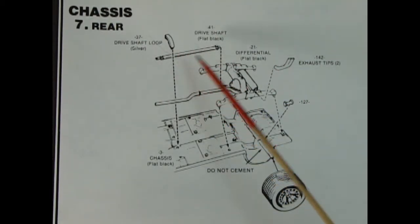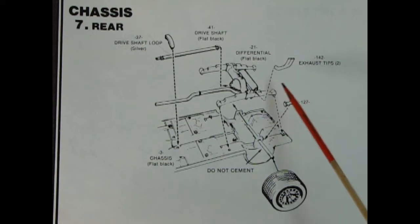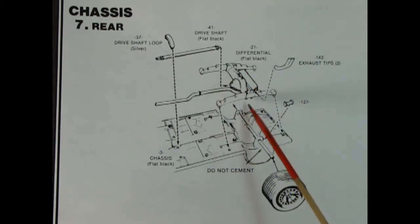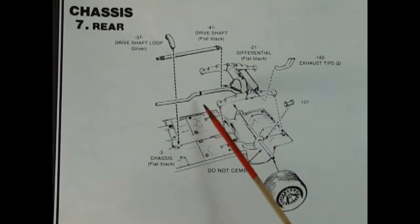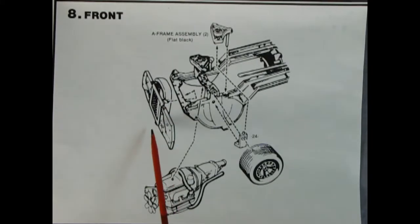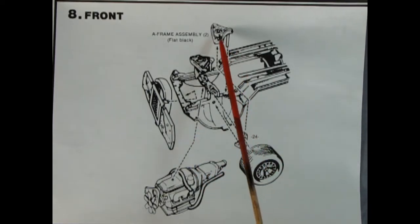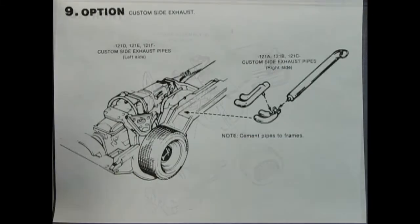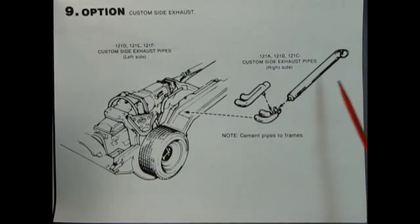Panel seven shows the chassis from the rear with drive shaft loop, drive shaft, exhaust dumps, differential with rear springs molded in place and exhaust pipes. Panel eight shows the radiator assembly being glued onto the chassis, axle blocks on top of the A-arms, engine drops in place and wheels go through that little block.